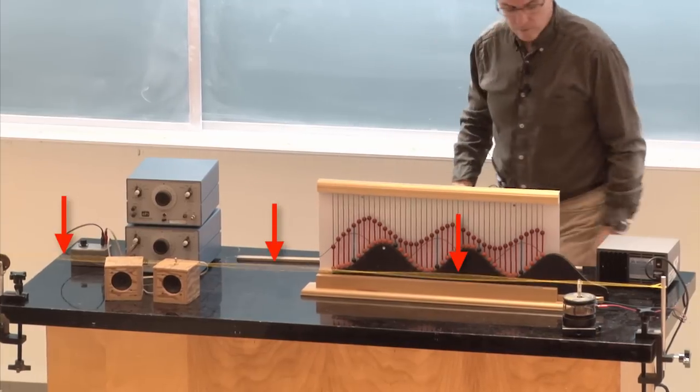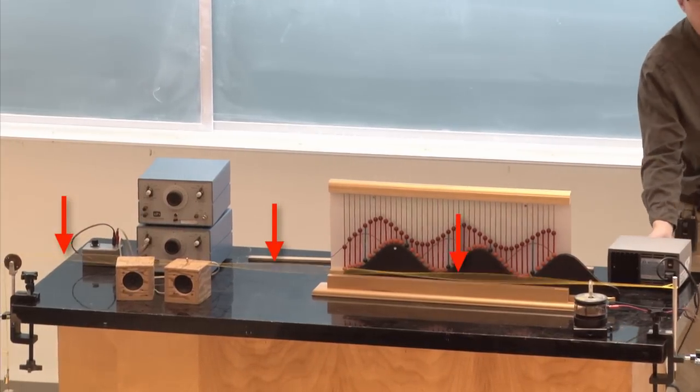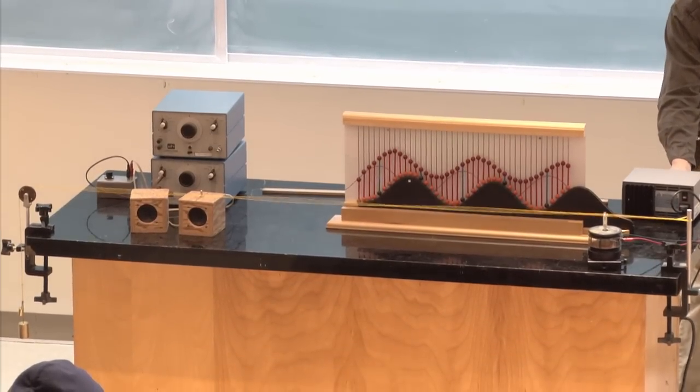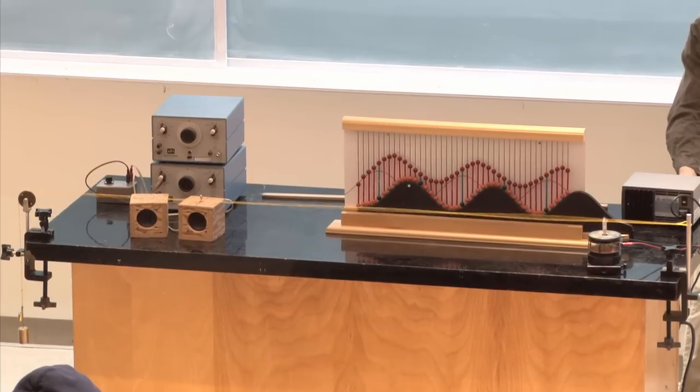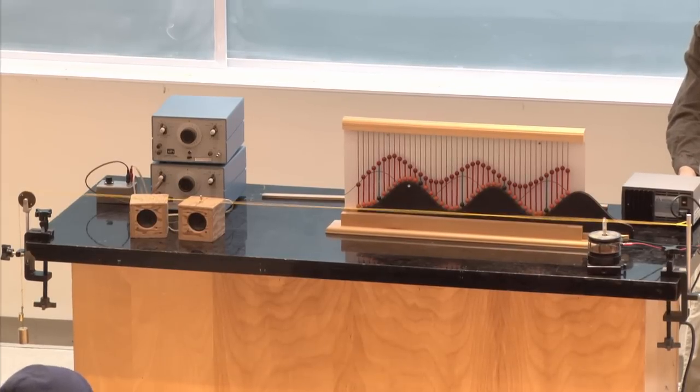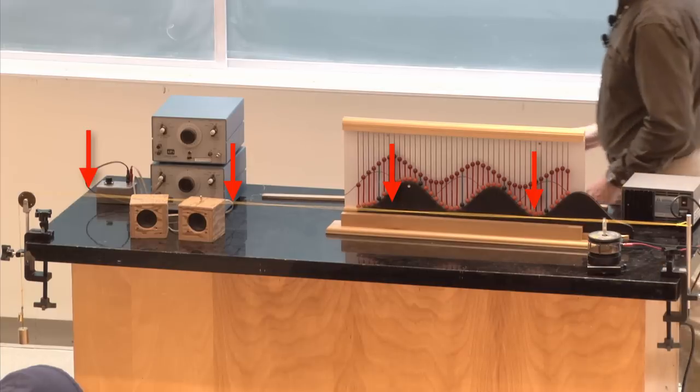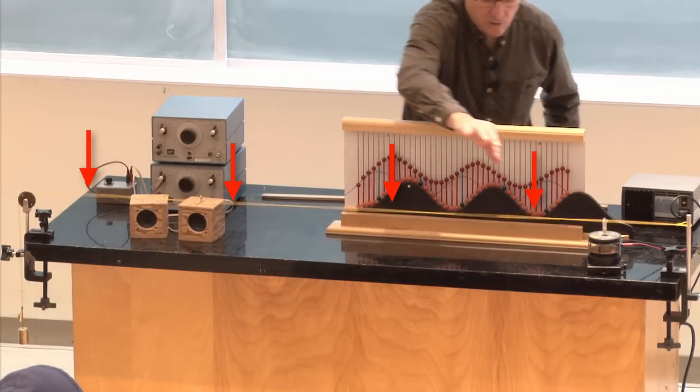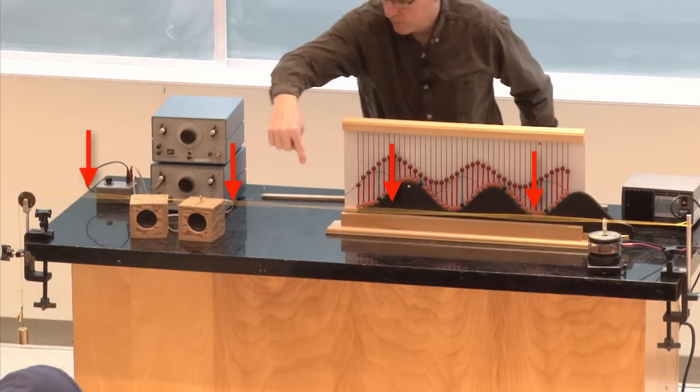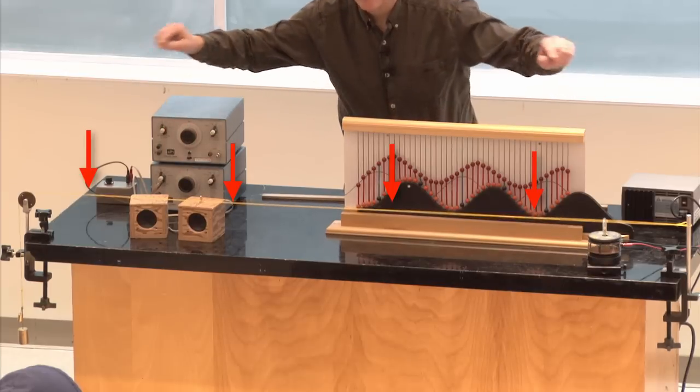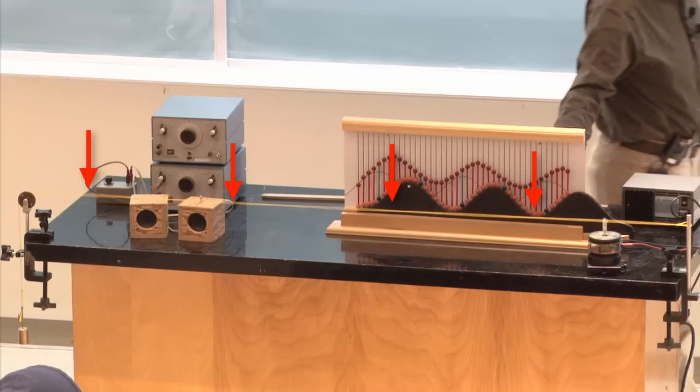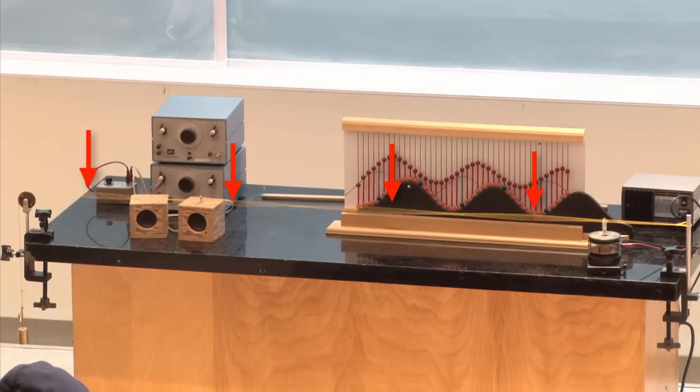And we can make more oscillations as well. Let's see, 39 plus 13, 52. So if I crank this up to 52, we should have four. And indeed, we do. I think you can see there are four anti-nodes to this wave with one, two, three, plus the ends, five nodes in this pattern. Question?